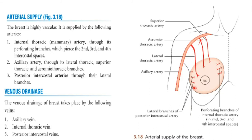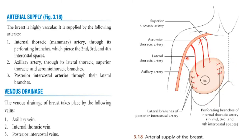The lower lateral part is supplied by the lateral branches of the posterior intercostal arteries. The veins accompany the arteries: the axillary veins, internal thoracic veins, and posterior intercostal veins drain the corresponding parts of the breast.